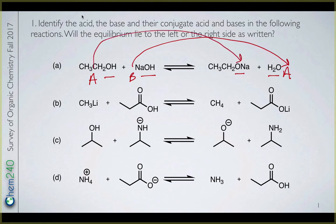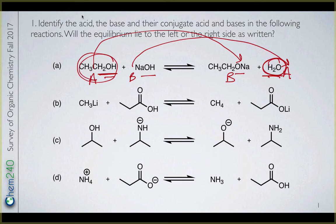The acid will become the conjugate base. In fact, this is a difficult problem to tell which side the equilibrium lies on because methanol, ethanol, water — they all have very similar pKa's. Without knowing specifically the pKa, I wouldn't expect you to know the direction of the equilibrium for this particular problem, because there are no obvious structural differences that you would be able to pick out at this point. What I can say is that water is slightly more acidic than ethanol, and so this should shift just slightly to the left side of the equation.